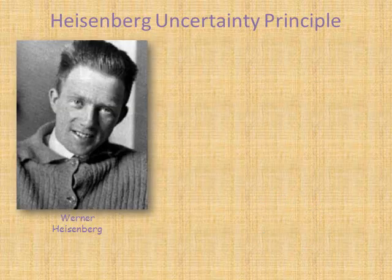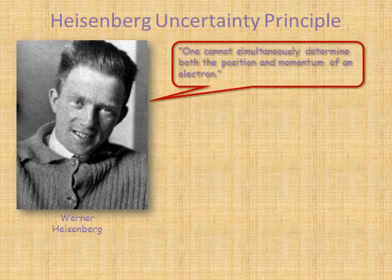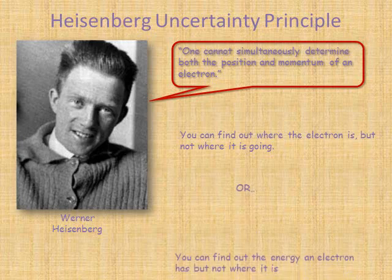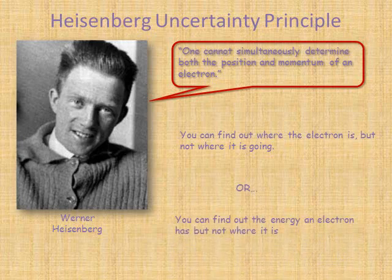Another fly in the ointment was the work of Werner Heisenberg, who said that it was impossible to tell both the position and the angular momentum of an electron. This meant that you could find out where an electron was, but not where it was going to finish up. Or alternatively, you could find out what the energy an electron had, but not where it was at any point in time.